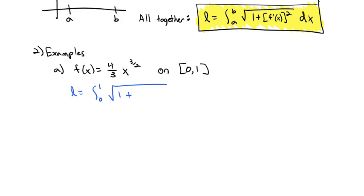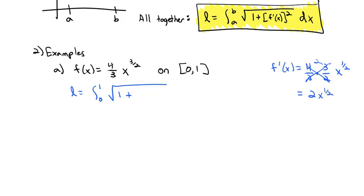Let's come over to the side and find the derivative. The derivative is 4/3 times, bringing the exponent out front, 3/2, times x to the 1/2. That's nice because the 3s divide out and 4 over 2 is 2. So really the derivative is 2x to the 1/2. That's the derivative of the function — 2x to the 1/2.